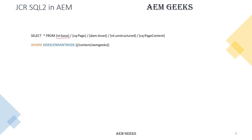To search from a specific site, you can add ISDESCENDANTNODE and mention the path from where you are searching the content. You can also add a WHERE clause, just as you would in SQL. For example, if you are searching cq:Pages from a geeks site and you want a specific node or page, you can apply conditions.